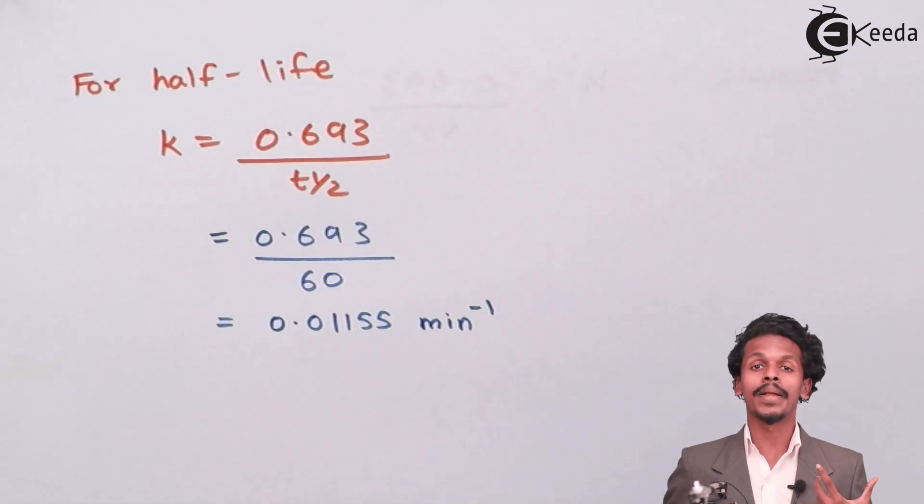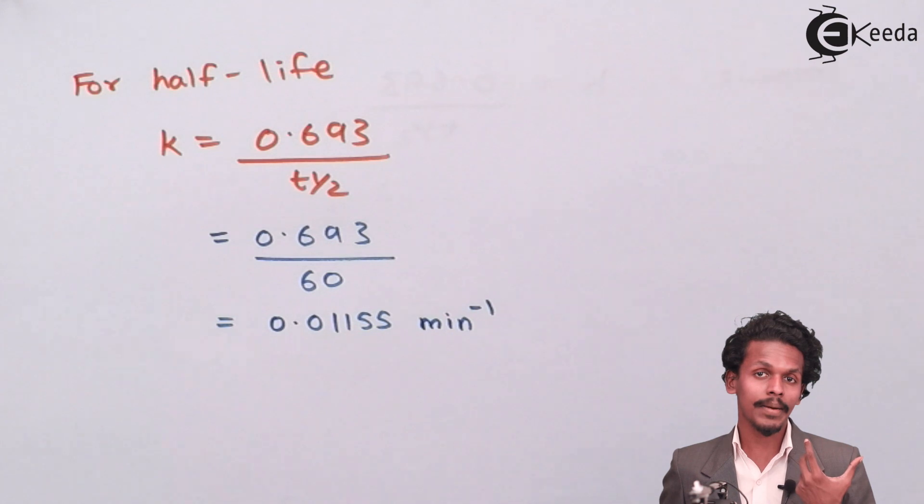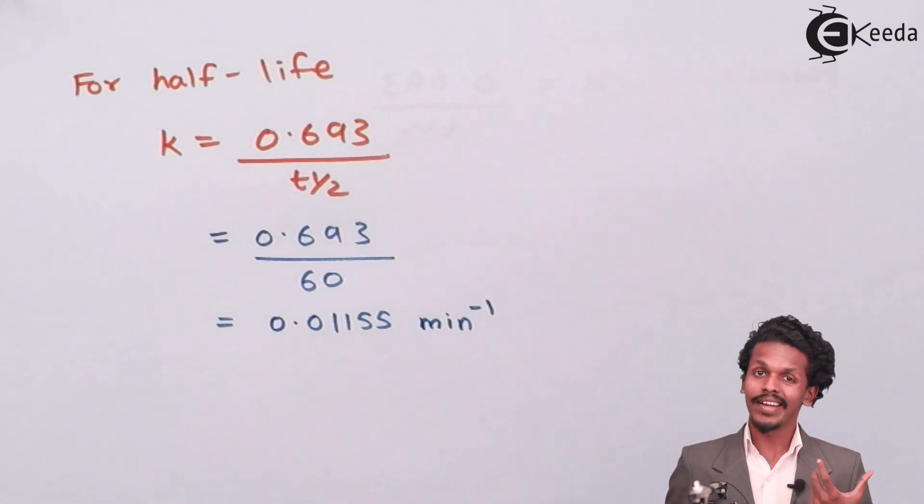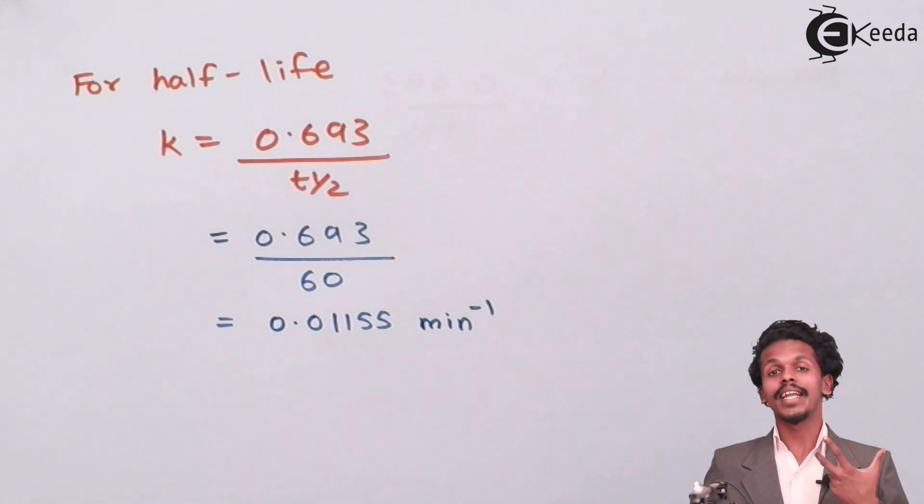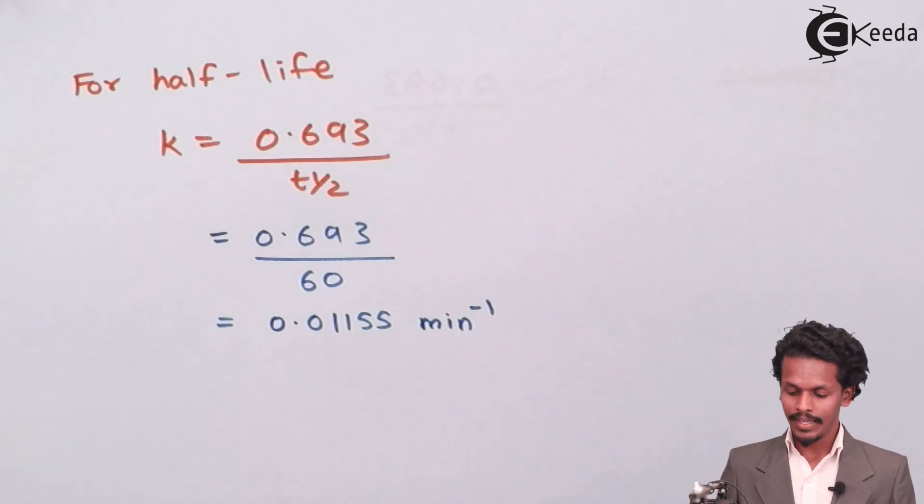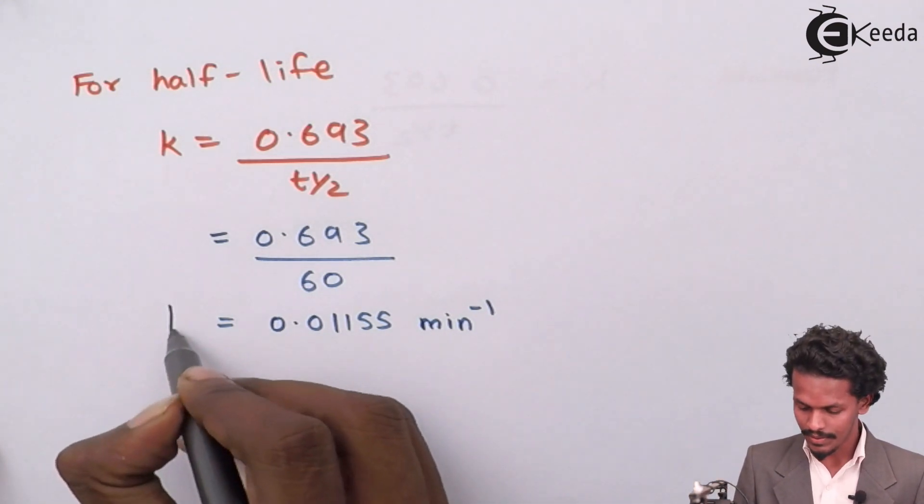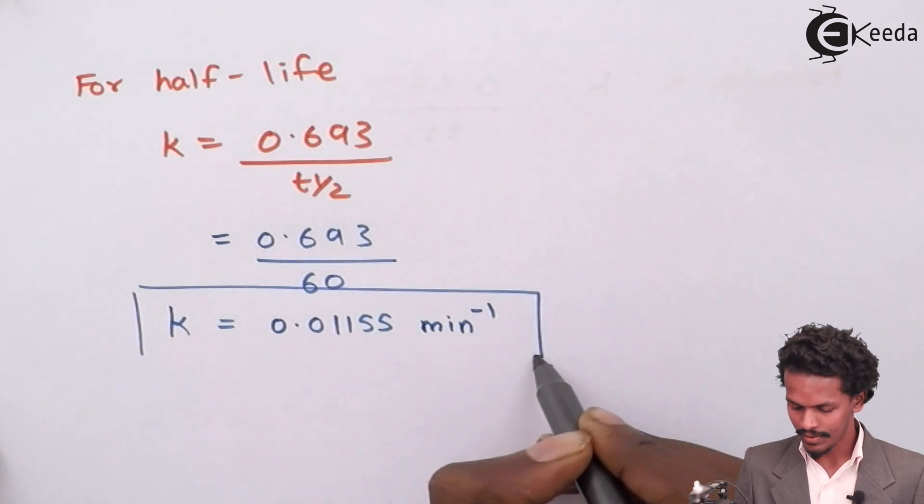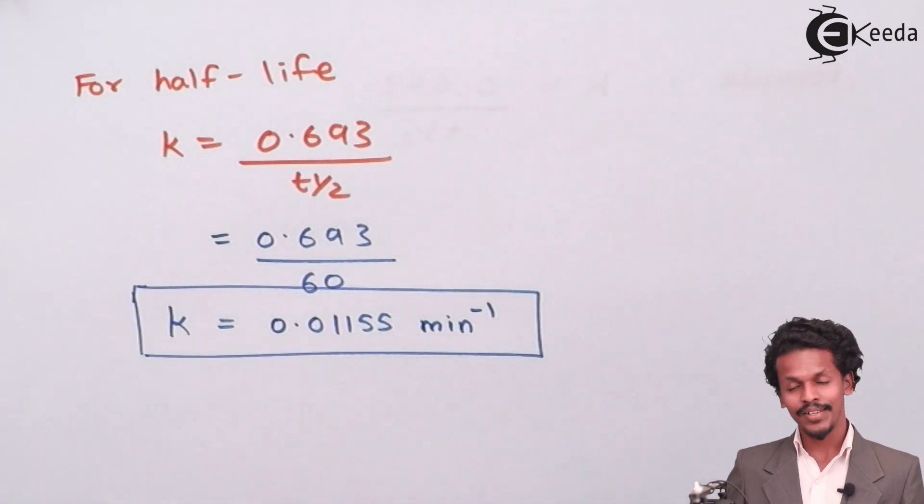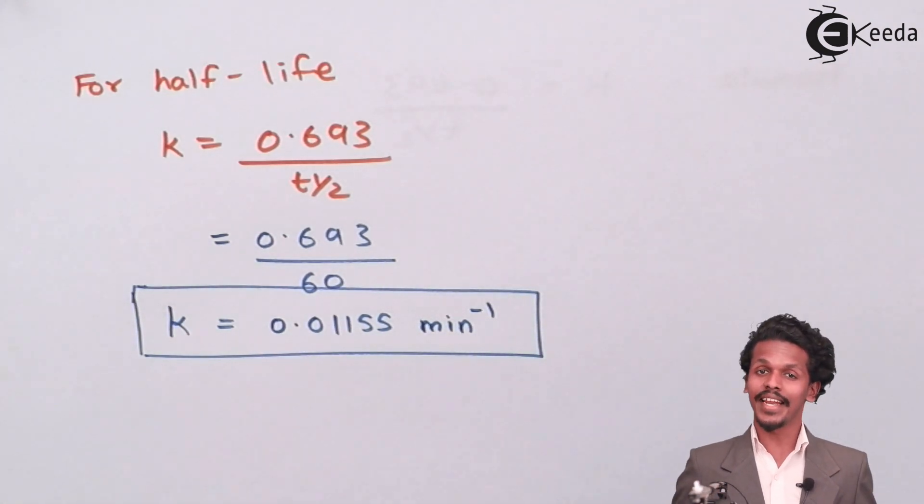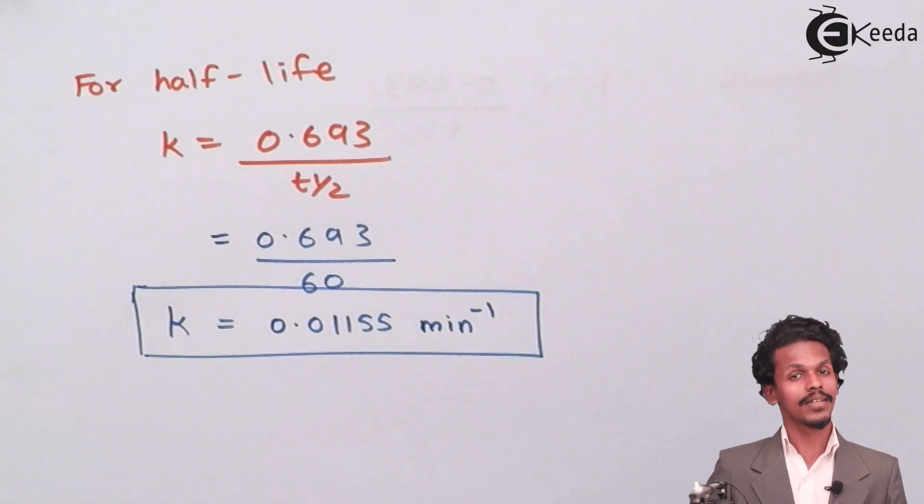Since the time value is given in minutes, the rate constant will be in minute inverse. This is how we calculate the rate constant for half-life. It's simple.